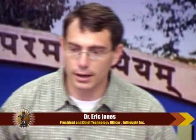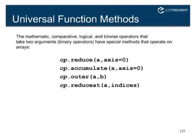All these operators we've been talking about — add, multiply, divide — and also functions, anything that is a binary operation taking two operands, are what are called universal functions in NumPy, and so they have this extra set of methods on them.